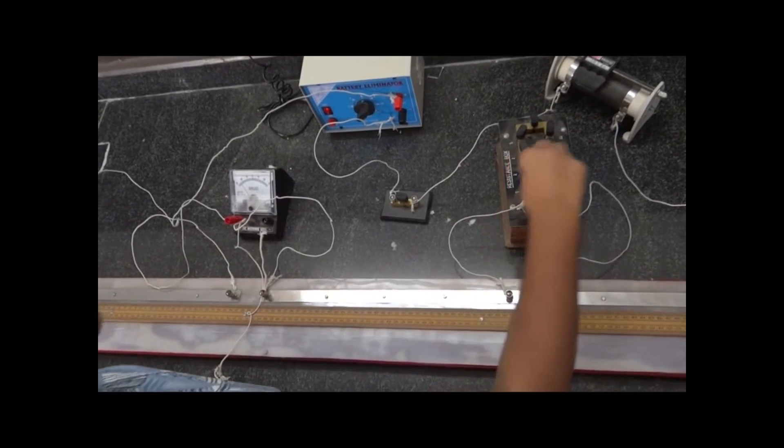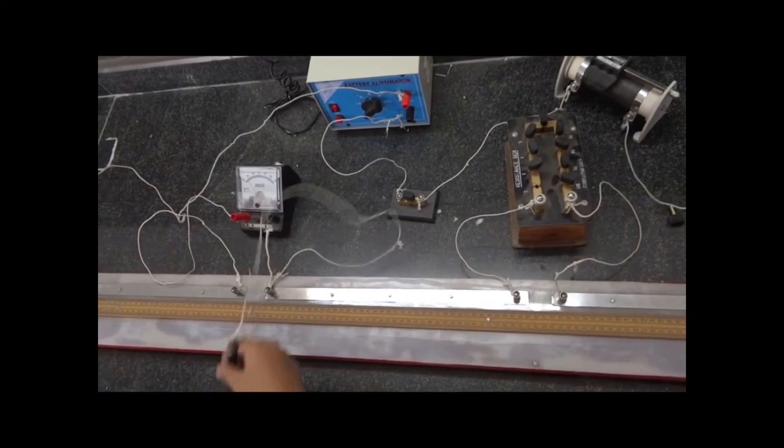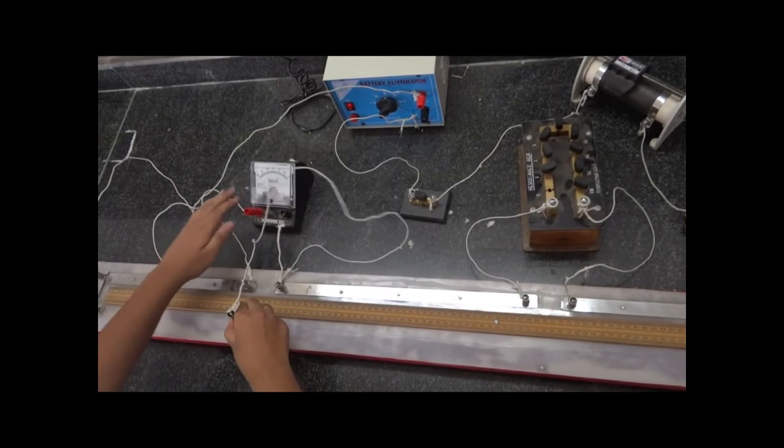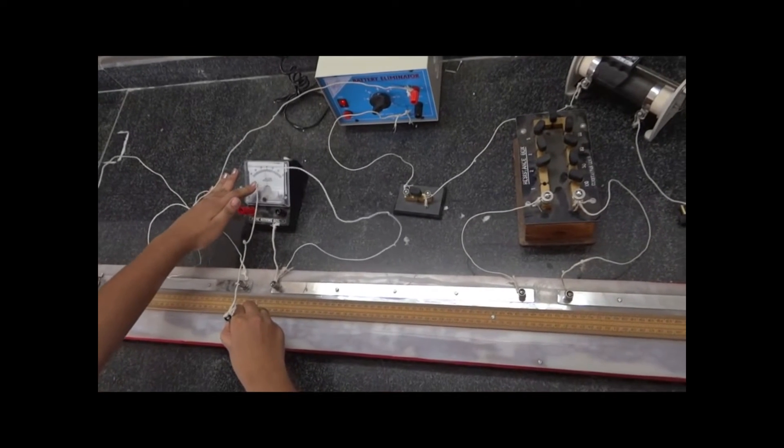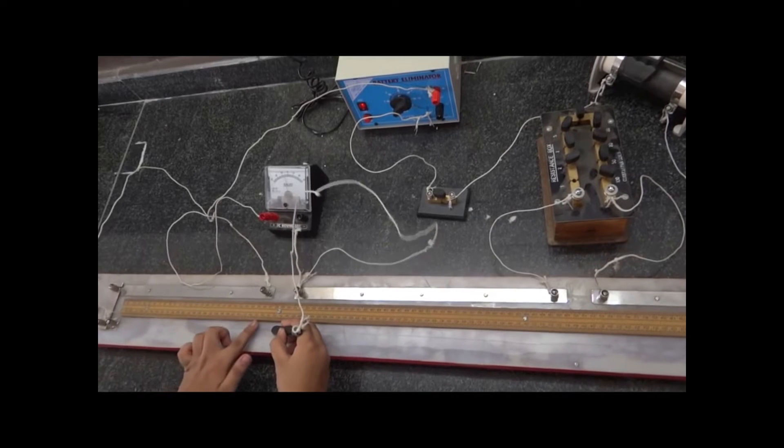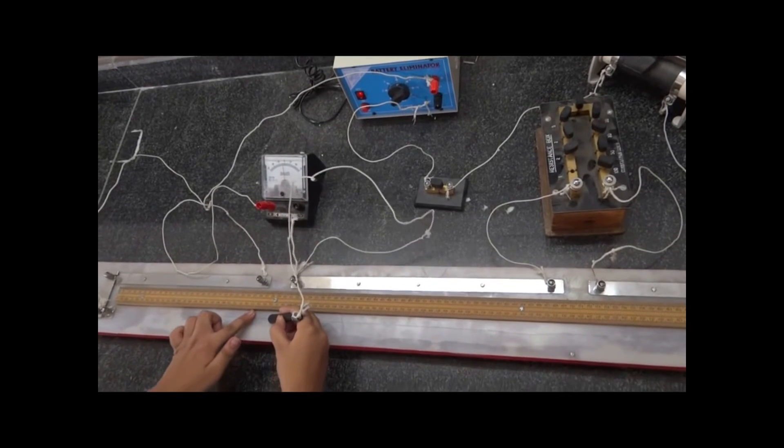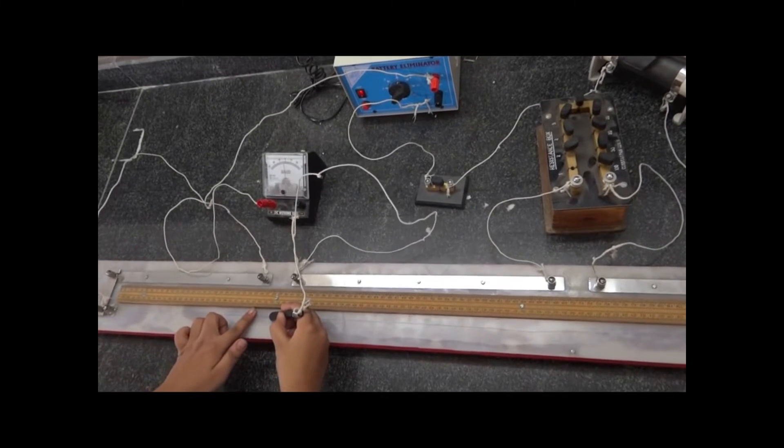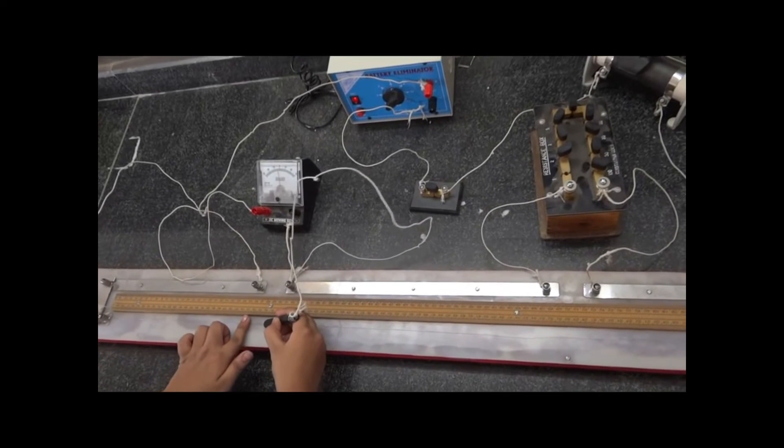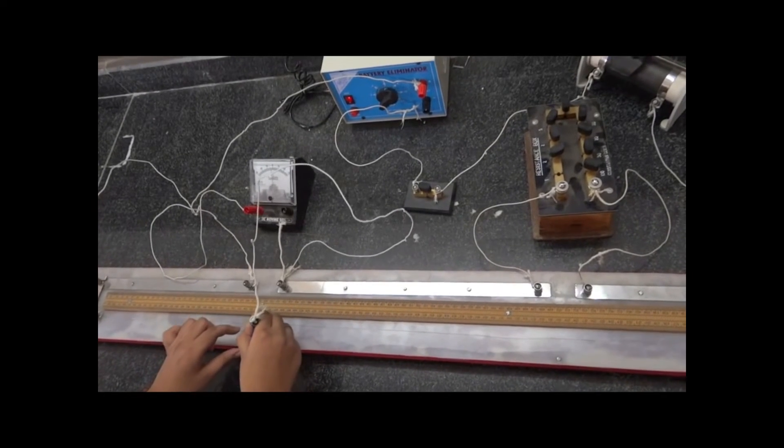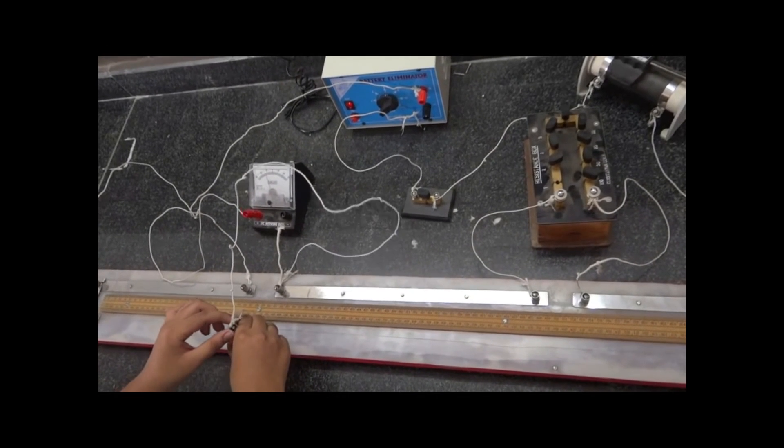Now we take out the one ohm resistance and put the jockey on the wire. The galvanometer deflection increases. The LG value is 66 and LR equals 100 minus 66, which equals 34. We will take three more readings by changing the value of R.